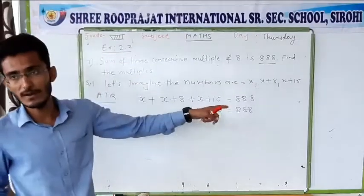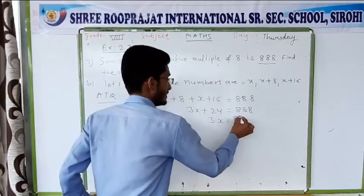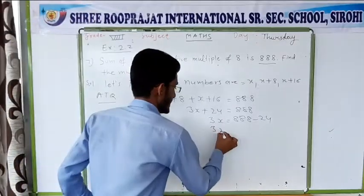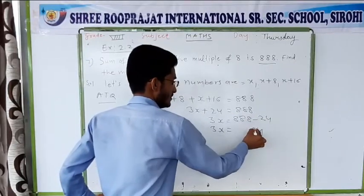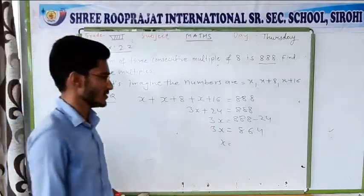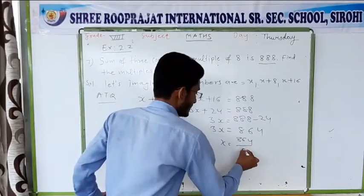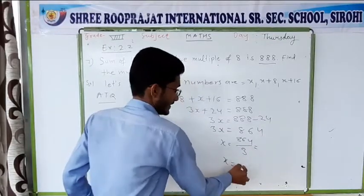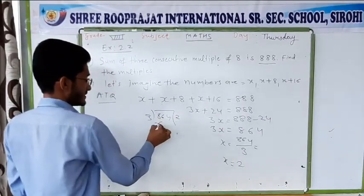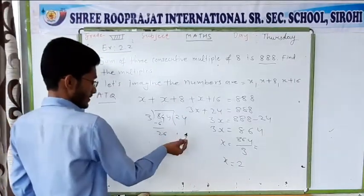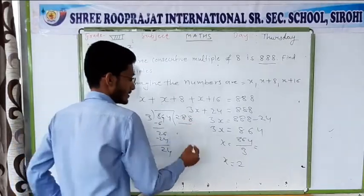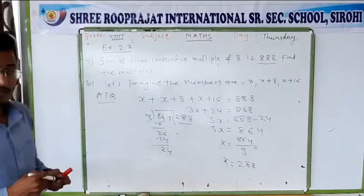First, shift 24 from the left-hand side to the right-hand side. So 3x equals 888 minus 24. That gives 3x equal to 864. Now to find x, divide both sides by 3: 864 divided by 3. Working through the division: 8 divided by 3 gives 2 remainder 2; bring down 6 to get 26, divided by 3 gives 8 remainder 2; bring down 4 to get 24, divided by 3 gives 8. So x equals 288.